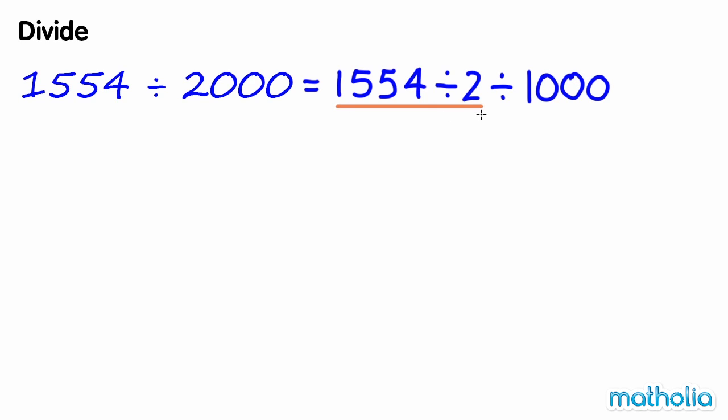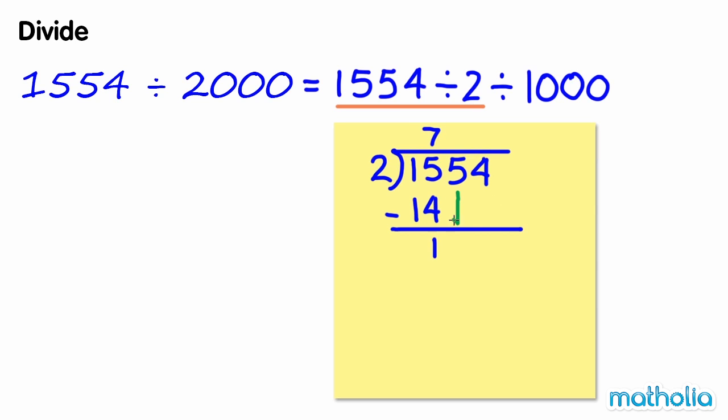First, let's find 1554 divide 2. 1554 divide 2 equals 777.